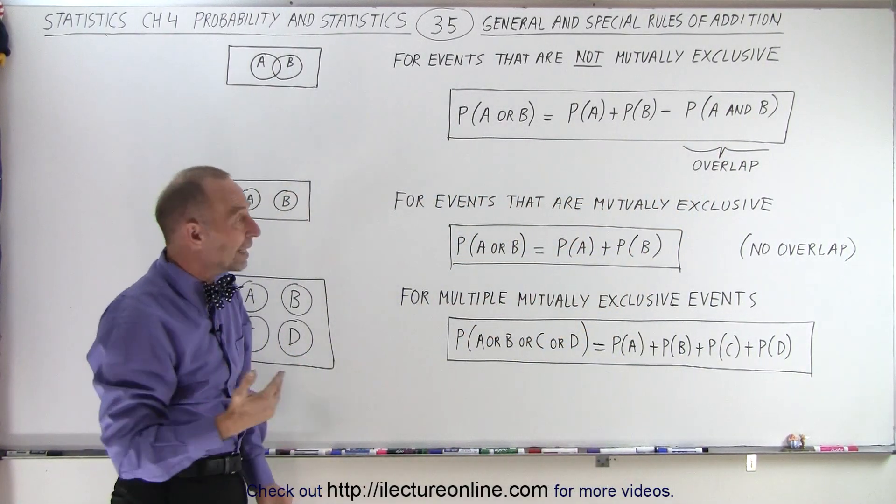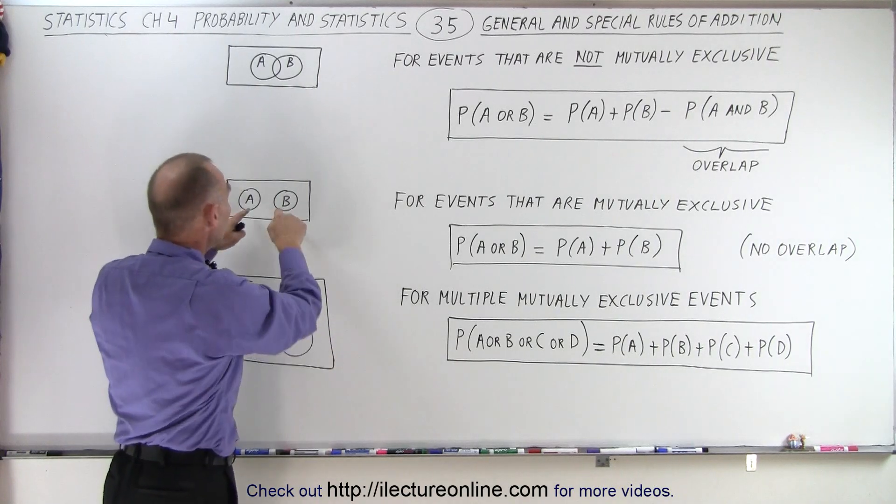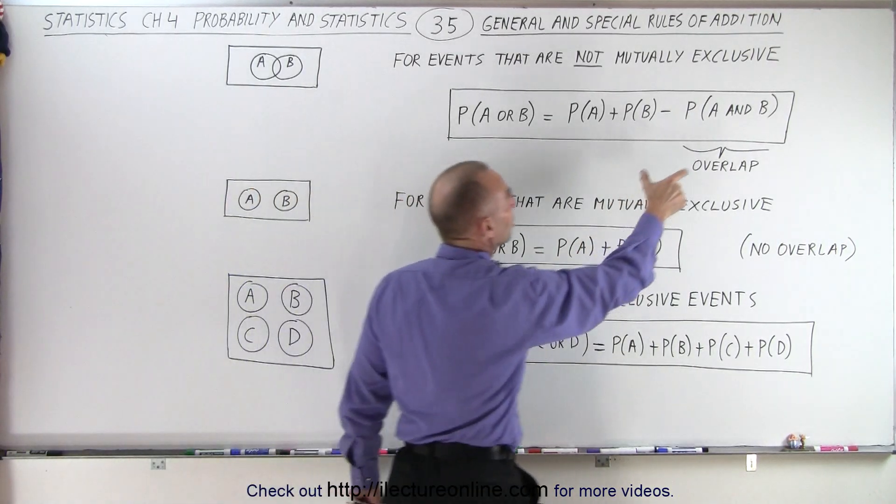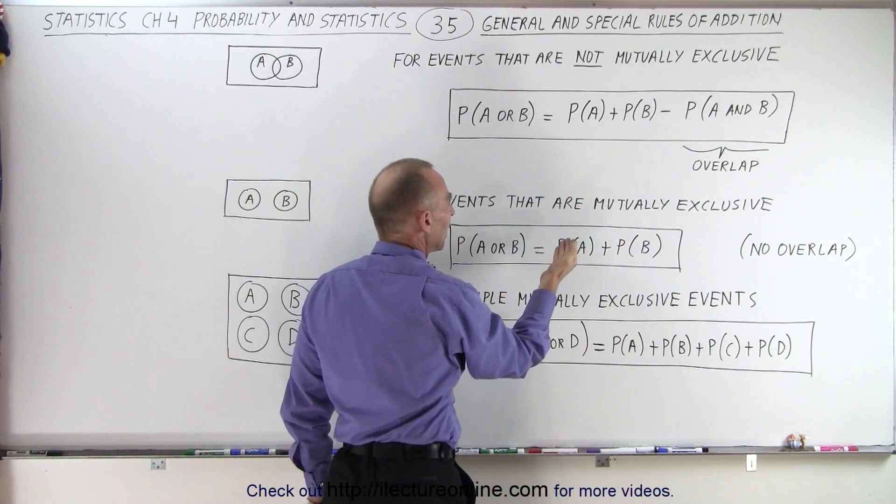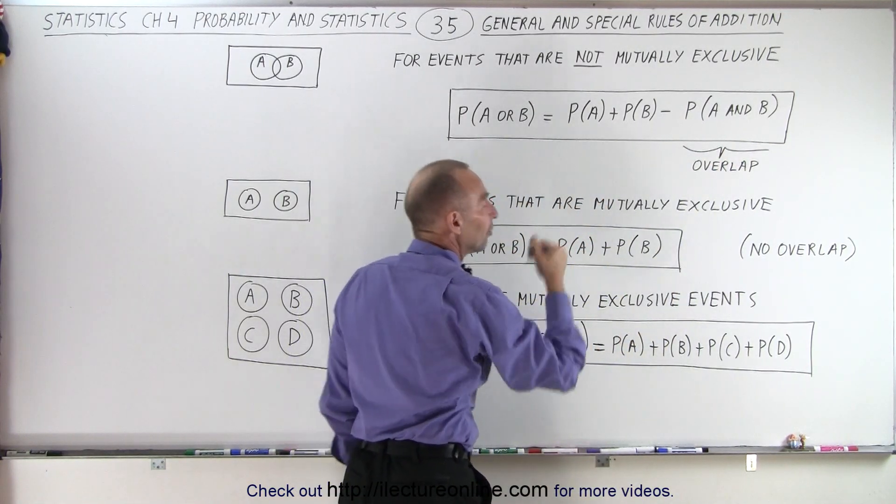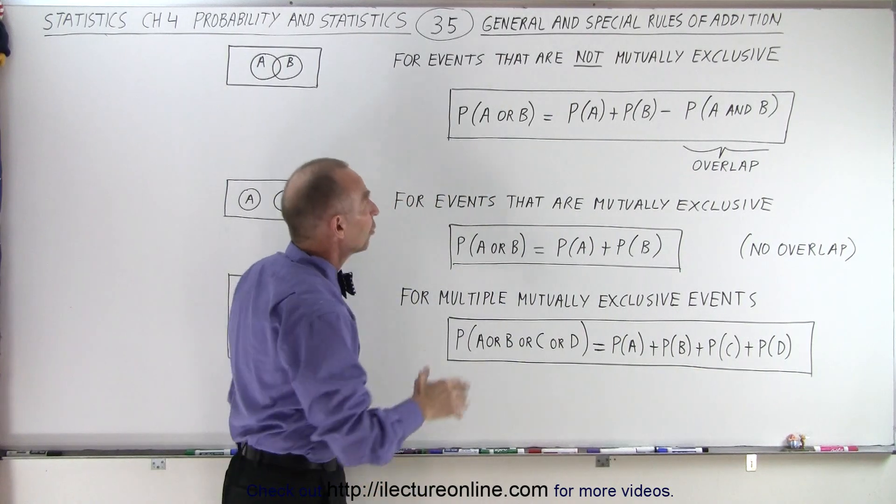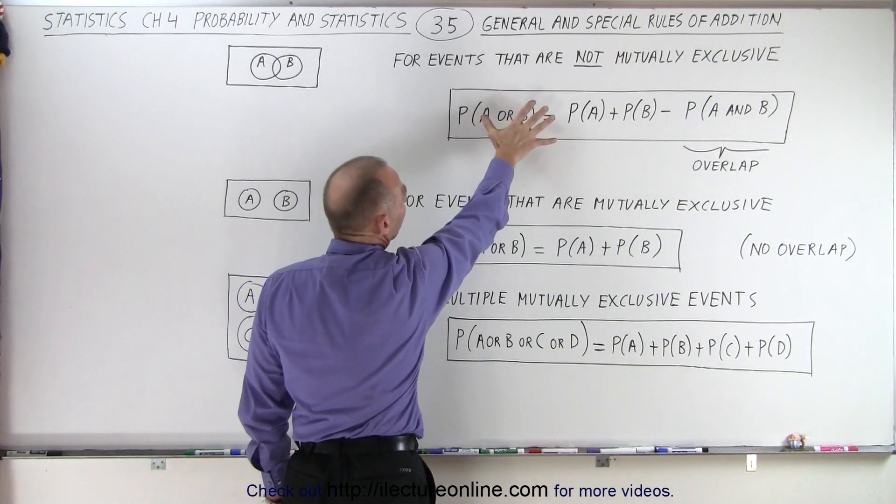But if the events are mutually exclusive, then there's no overlap, so we don't have that additional term because that term goes to zero. Therefore it's simply the probability of A plus the probability of B. This is called the general rule of addition.